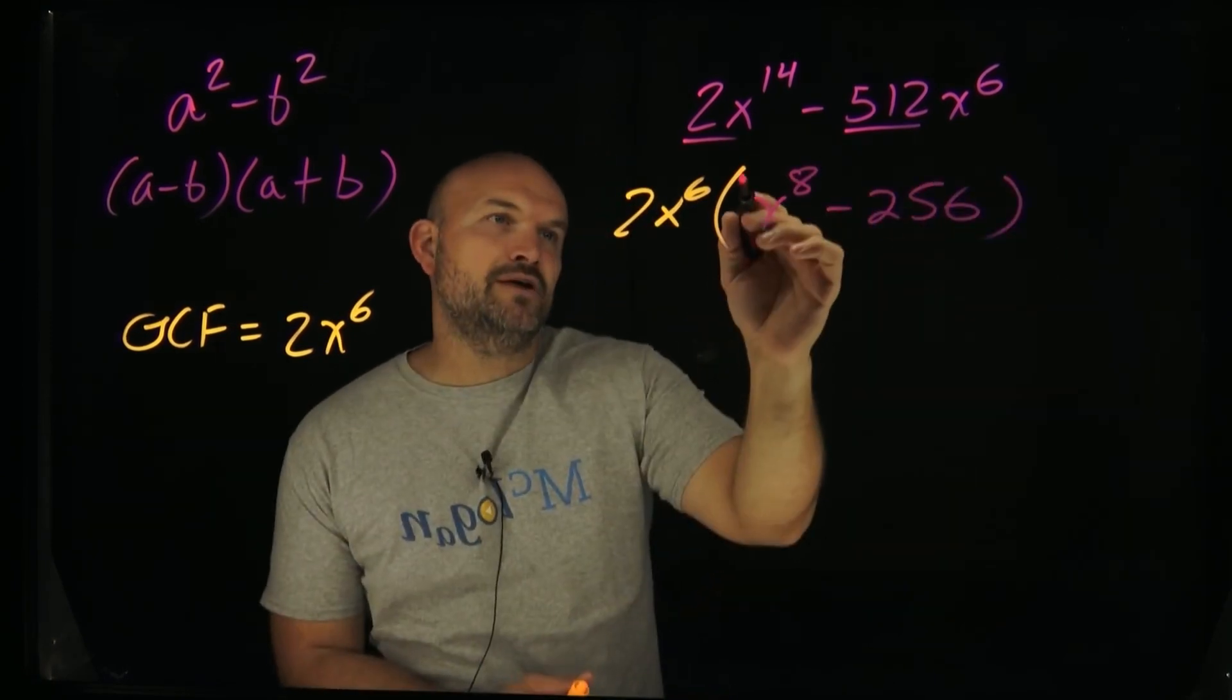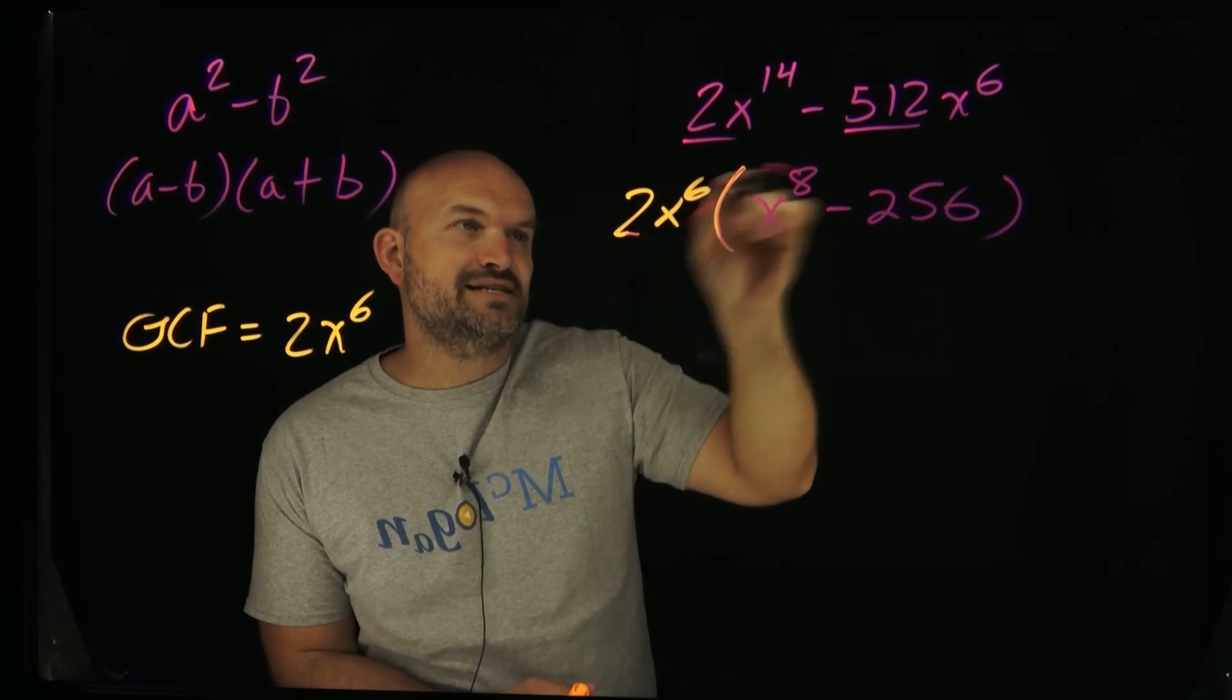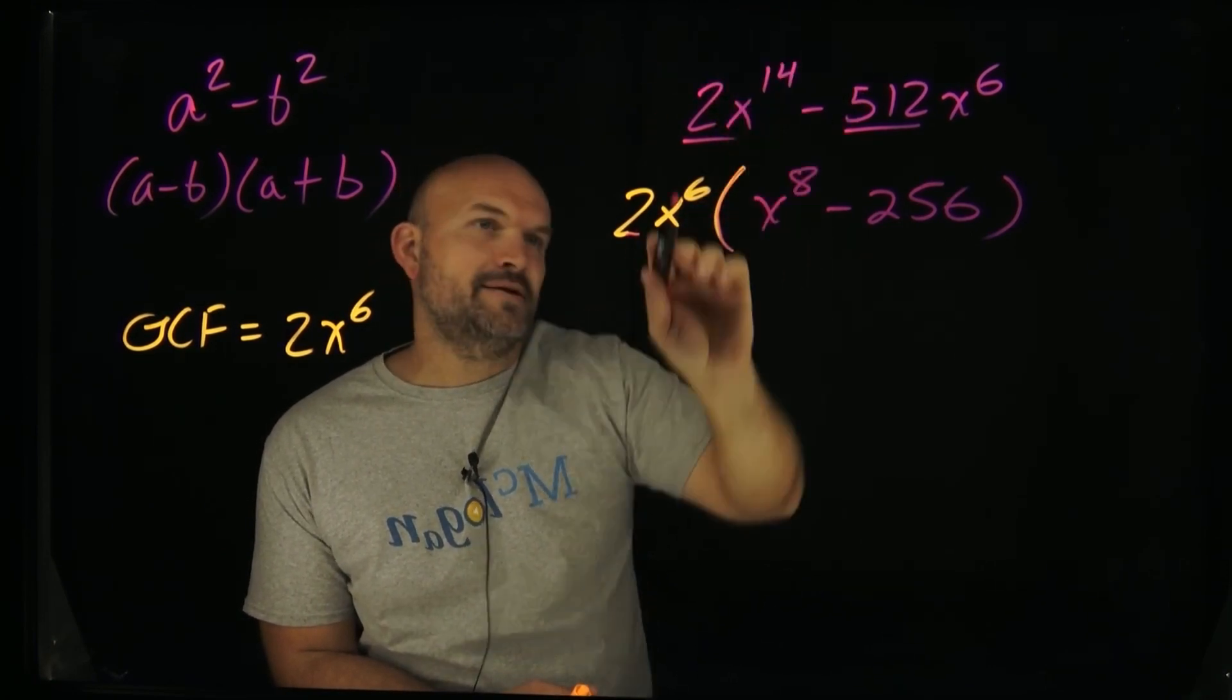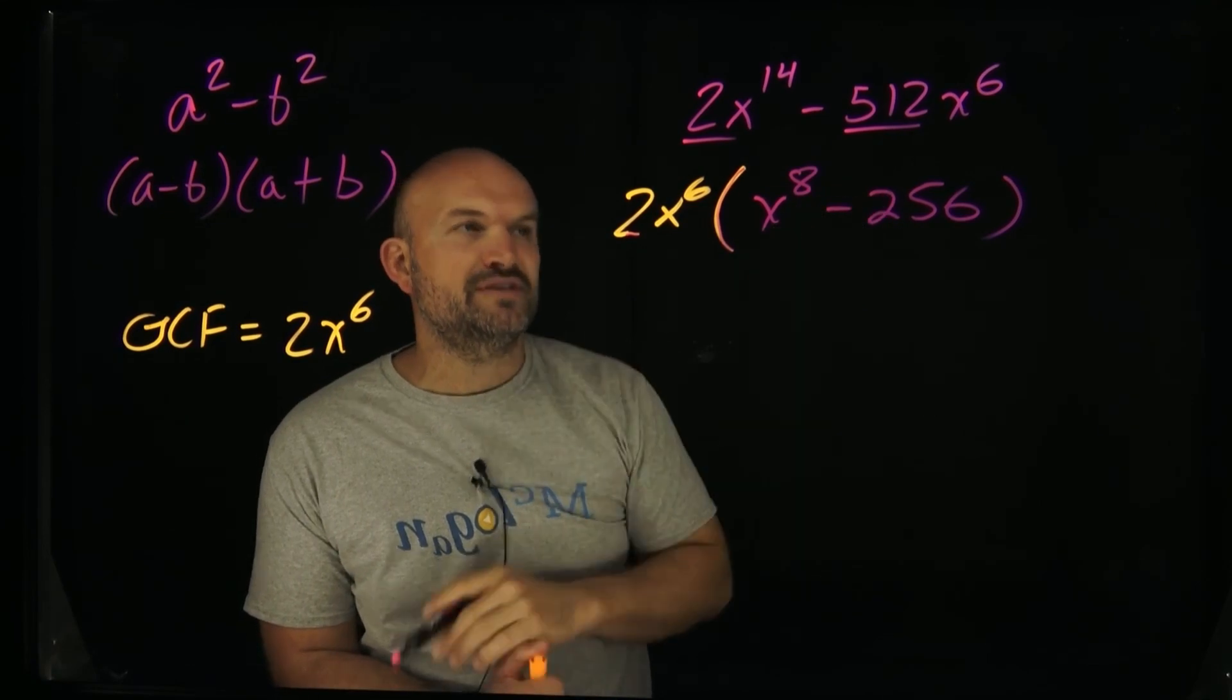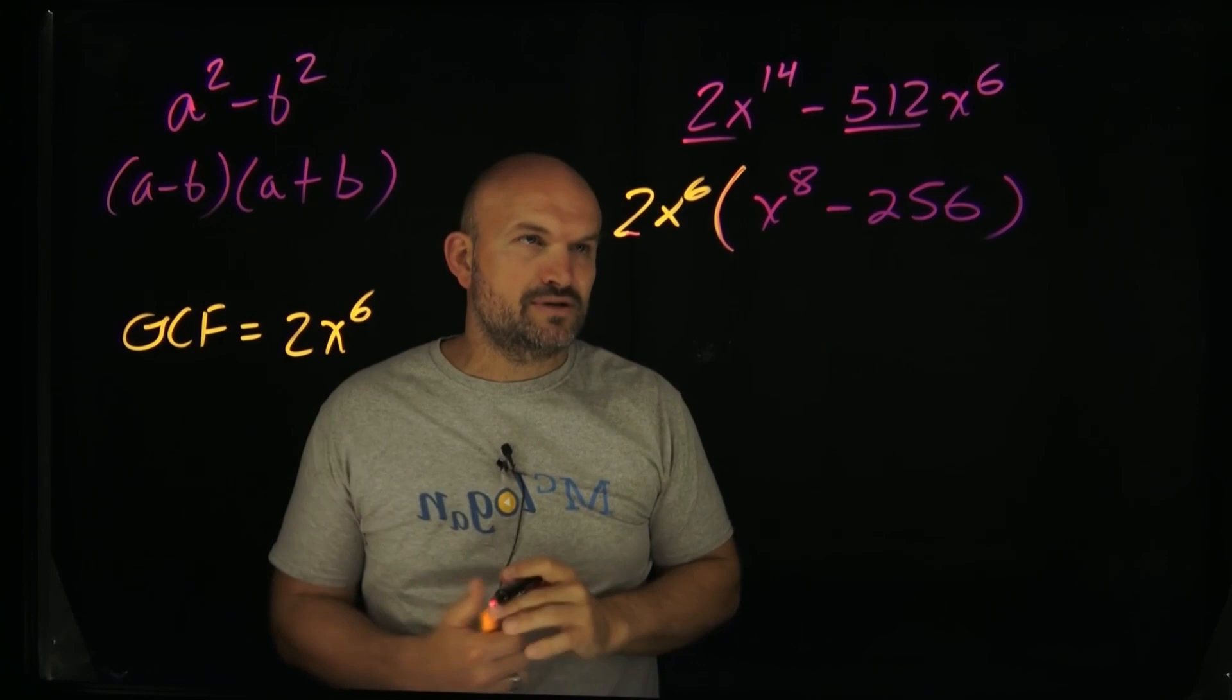Remember, you can always go back and check your work by just multiplying this back out. 2x to the 6th times x to the 8th is going to give us 2x to the 14th. And 2x to the 6th times a negative 256 is going to give you x to the 6th. And 512 divided by 2, you can see it works out there.